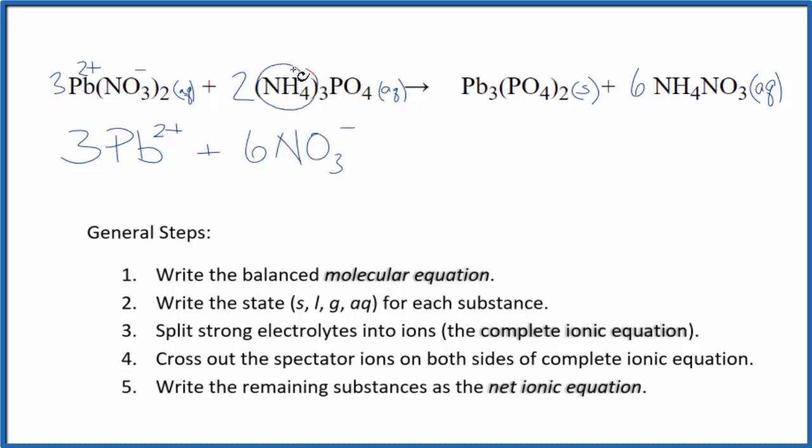Over here, the ammonium ion, the whole thing, has a 1+, another one you should remember. So, I have 2 times 3. That gives me 6 of these ammonium ions here. And I have 2 of the phosphate. The phosphate is 3-. So, I have 2 phosphate ions.